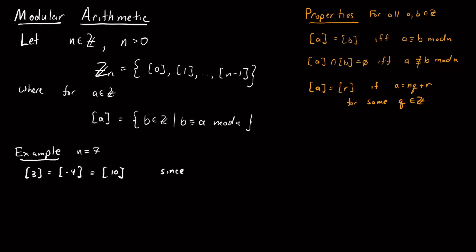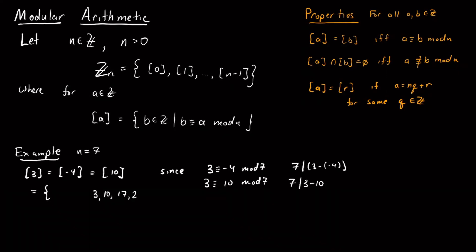Using our properties, 3 is congruent to −4 mod 7 because 7 divides 3 − (−4) = 7. And 3 is congruent to 10 mod 7 because 7 divides 3 − 10. So these equivalence classes are all equal. The elements of this set are all integers with remainder 3 when divided by 7: …3, 10, 17, 24, … going up by 7, and 3 − 7 = −4, −11, … going down.